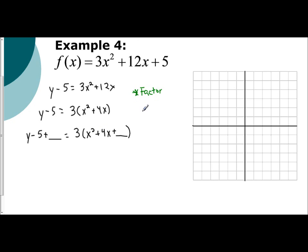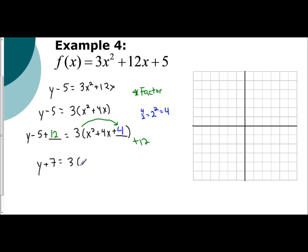And now I can complete the square. So y minus 5 plus my placeholder equals 3 times the quantity x squared plus 4x plus my placeholder. We take half of our b value — half of 4 is 2 — and square it to get positive 4. So positive 4 goes on the right side. However, we need to take into account that we factored — we're not really adding 4 if you distribute; you're really adding 12. So I add 12 on the other side as well. Negative 5 plus 12 is 7, so I have y plus 7 equals 3 times the quantity x plus 2 squared. Solving for y: y equals 3 times the quantity x plus 2 squared minus 7.